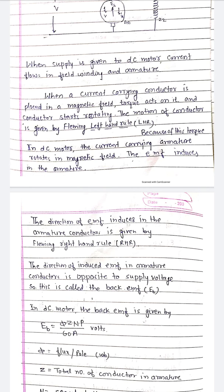The direction of induced EMF in armature conductor is opposite to supply voltage. So, this is called the back EMF EB.